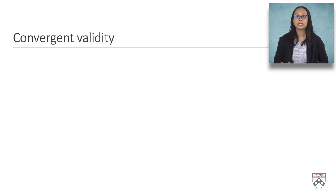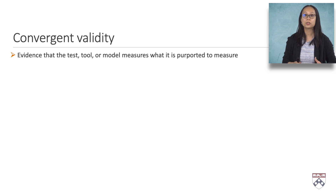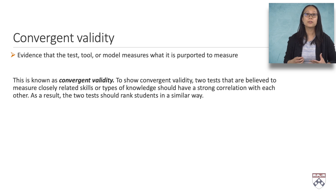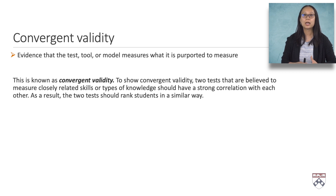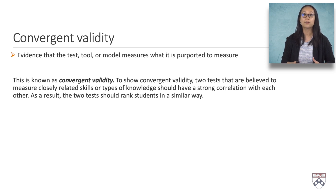Let's start with the first type of evidence, referred to as convergent validity. This type of validity refers to evidence that the test or model measures what it is intended to measure. To show convergent validity, two tests that are believed to measure closely related skills or types of knowledge should have a strong correlation with each other. As a result, the two tests should rank students who are responding to a set of questions in a similar way, which helps support convergent validity.